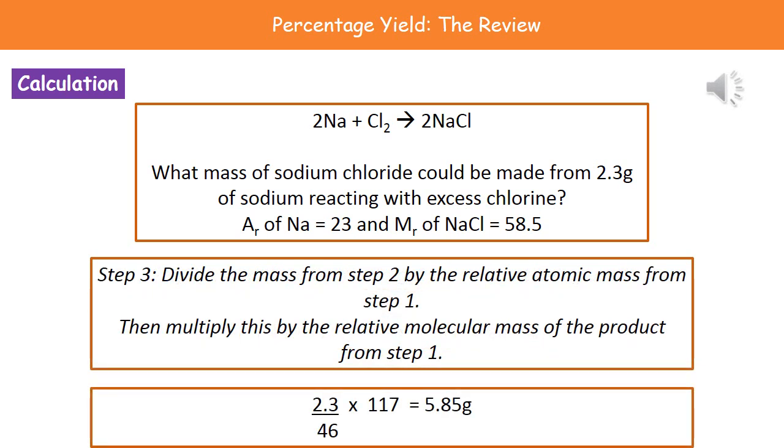Finally, for step three, what we actually need to do is divide that mass from step two by the relative atomic mass from step one. So we can see at the bottom that we've got our 2.3, which is our mass from step two, and we divide it by that atomic mass that we worked out in step one, which is 46 for our sodium. Then, because we need to know the amount of our sodium chloride, we just multiply that answer by the relative molecular mass of the product from step one once more, which is 117. So our final calculation is 2.3 divided by 46, and then we multiply that by 117, which gives us our final answer of 5.85 grams.